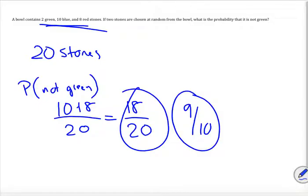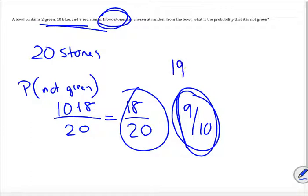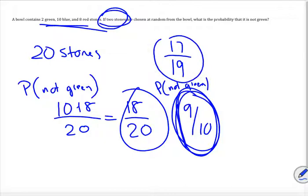Let's back up — the stone problem actually said two stones are chosen. So the probability of not getting a green on the first draw is nine out of ten. If you keep that non-green stone, there are now 19 stones left, with 17 that are not green. So the probability of not getting green on the second draw would be 17 out of 19. We'll talk more about that, but just realize there are two different events going on here.